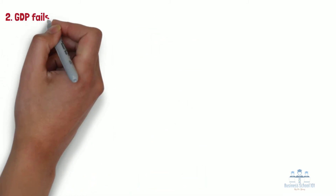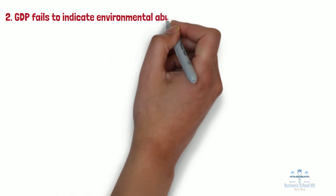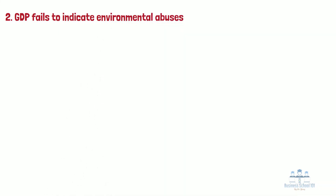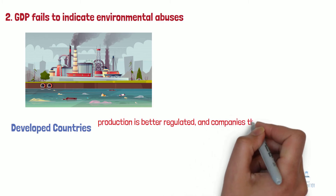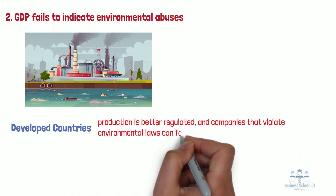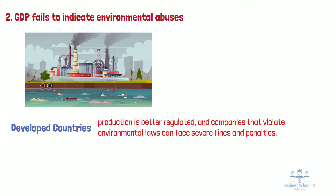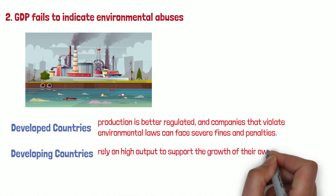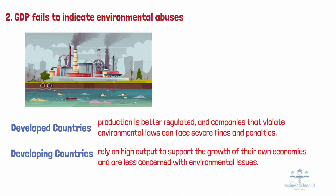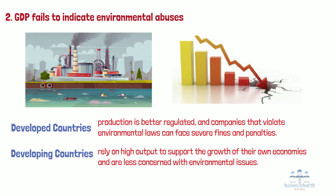Second, GDP fails to indicate environmental abuses. As we know, producers can increase their output by polluting or damaging the environment. In developed countries, production is better regulated and companies that violate environmental laws can face severe fines and penalties. However, many developing economies rely on high output to support the growth of their own economies and are less concerned with environmental issues. Nonetheless, there is a consensus that such environmental damage should be counted against a country's GDP since it is not sustainable production and may impact future growth.